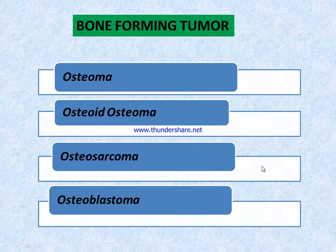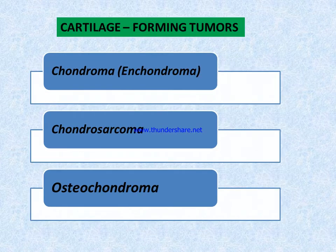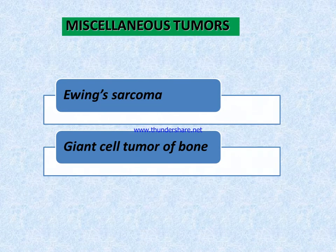Types of bone tumors include bone-forming tumors and cartilage-forming tumors. In bone-forming tumors, we include osteoma, osteoid osteoma, osteosarcoma, and osteoblastoma. In cartilage-forming tumors, we include chondroma (also called enchondroma), chondrosarcoma, and osteochondroma. Miscellaneous tumors include Ewing's sarcoma and giant cell tumor of bone.